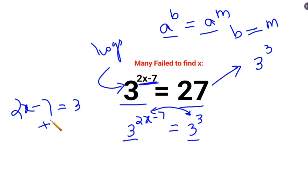Adding 7 on both sides, this gets cancelled. We have 2x equals to 3 plus 7 is 10. Dividing 2 on both sides, we get the value of x. And we know that value of x is nothing but just 5.